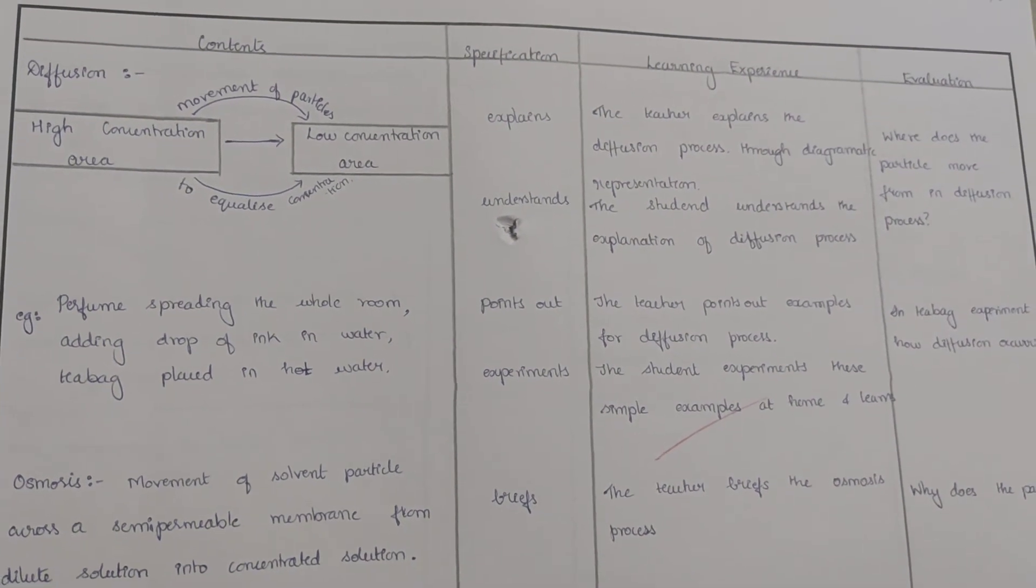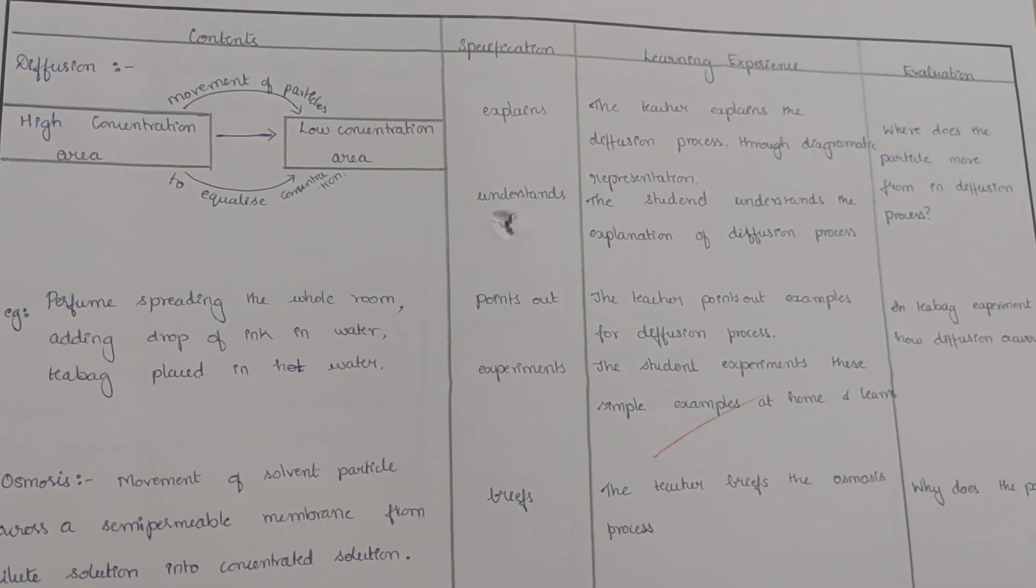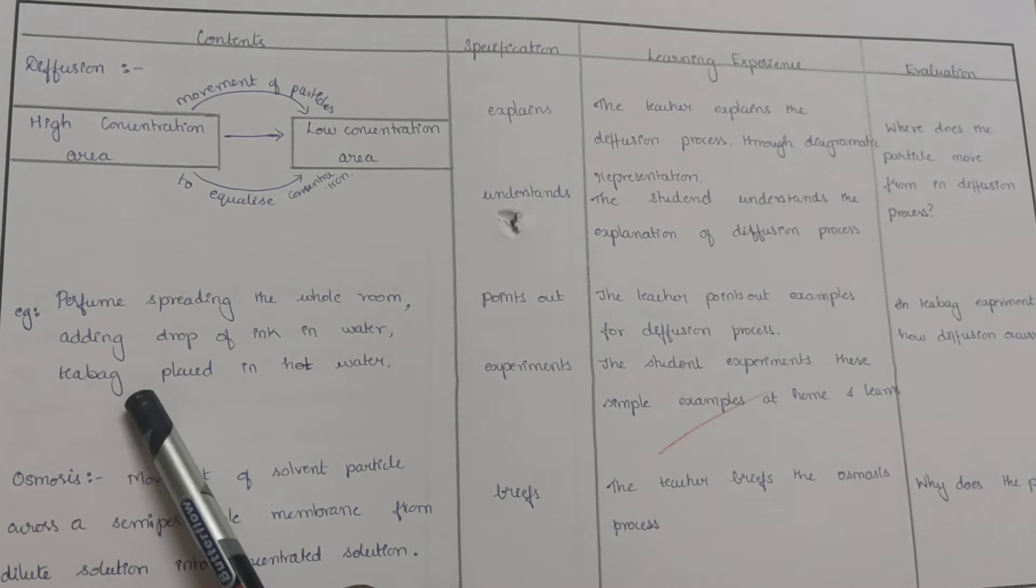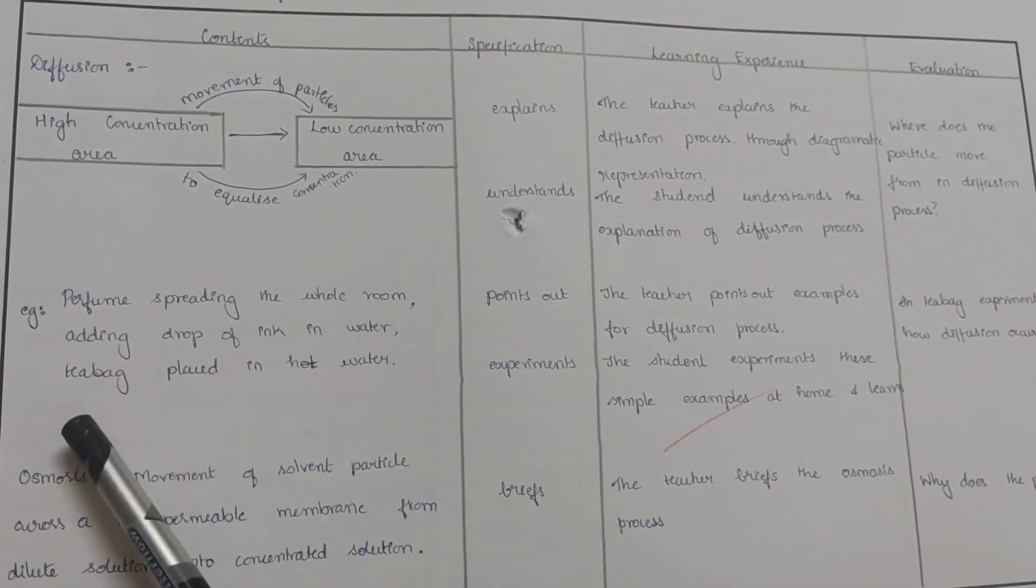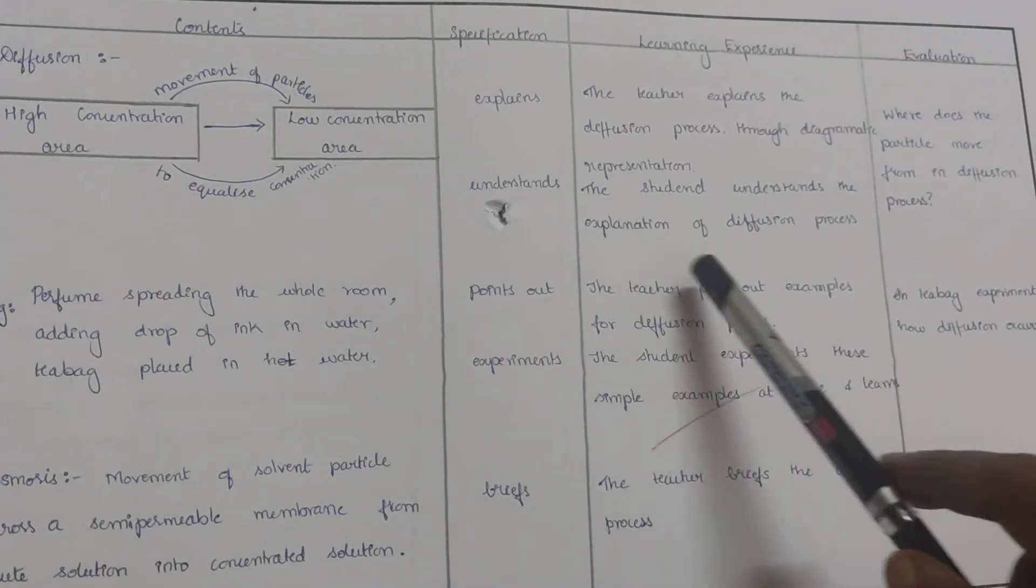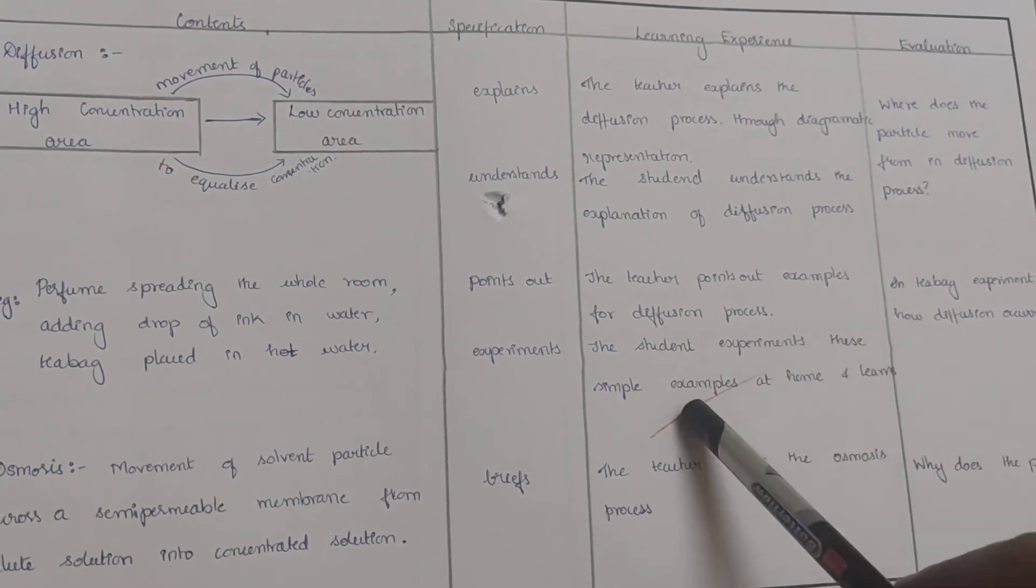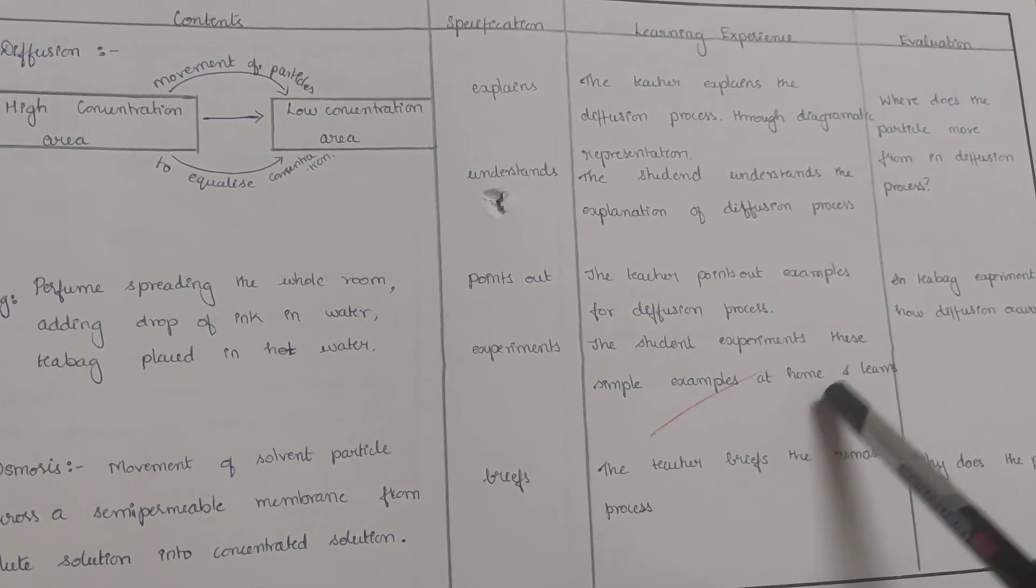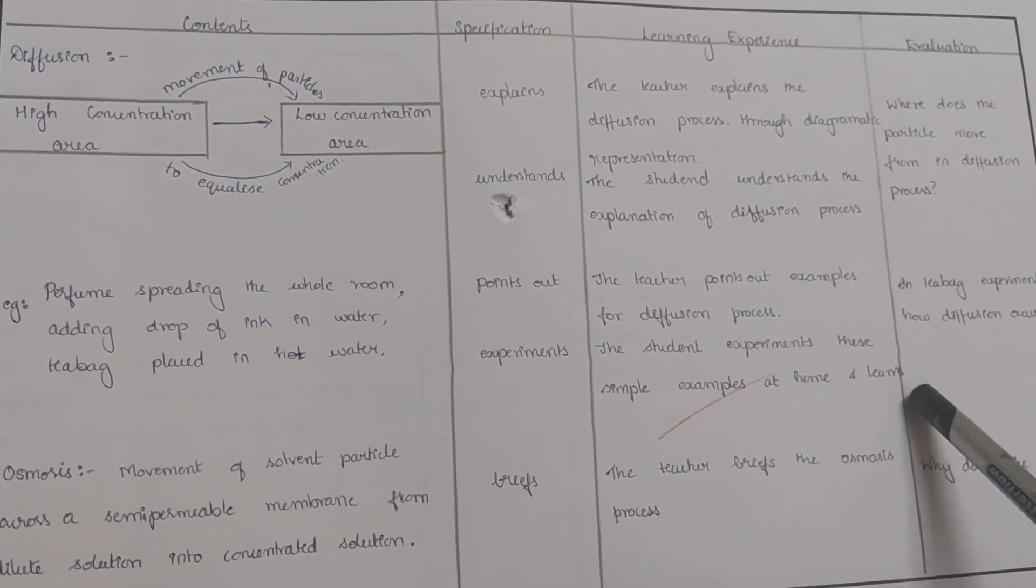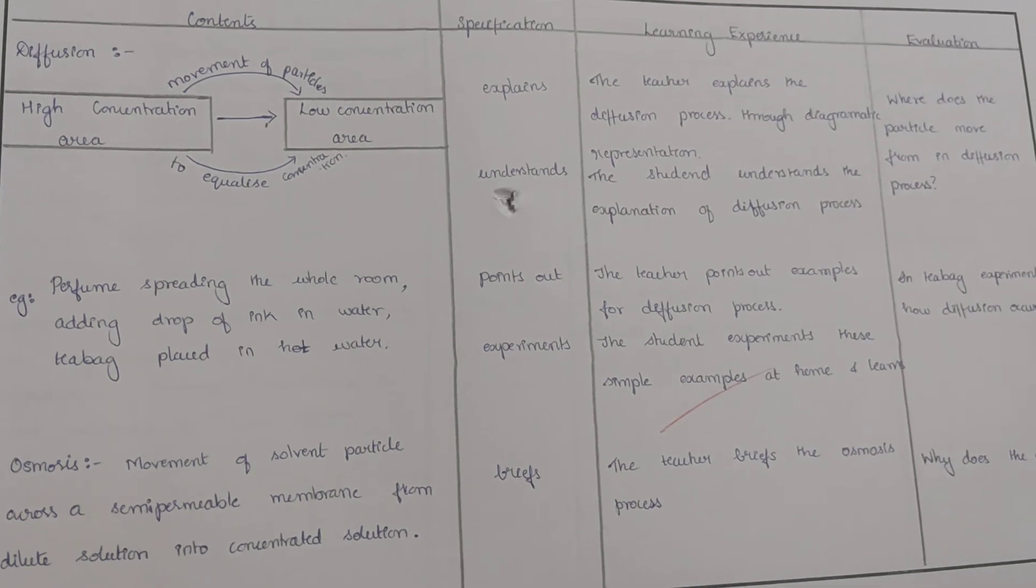We give an example by saying that perfume spreading the whole room, adding drop of ink in water, teabag placed in hot water. The teacher points out the examples for diffusion process and the student experiments these simple examples at home and learn. In teabag experiment, how diffusion occurs?